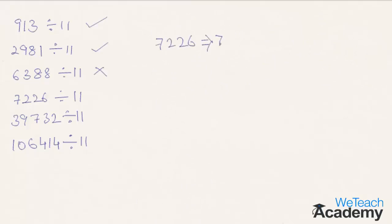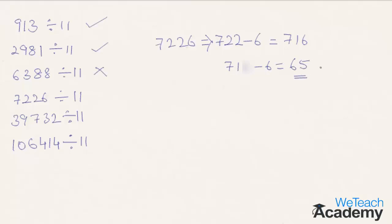Coming to the next number, which is 7226. Subtract the last digit 6 from the remaining number 722, which gives 722 minus 6, equal to 716. Now repeating the concept: subtract 6 from the remaining number 71, which gives 71 minus 6, equal to 65. Since 65 is not divisible by 11, the given number 7226 is not divisible by 11.